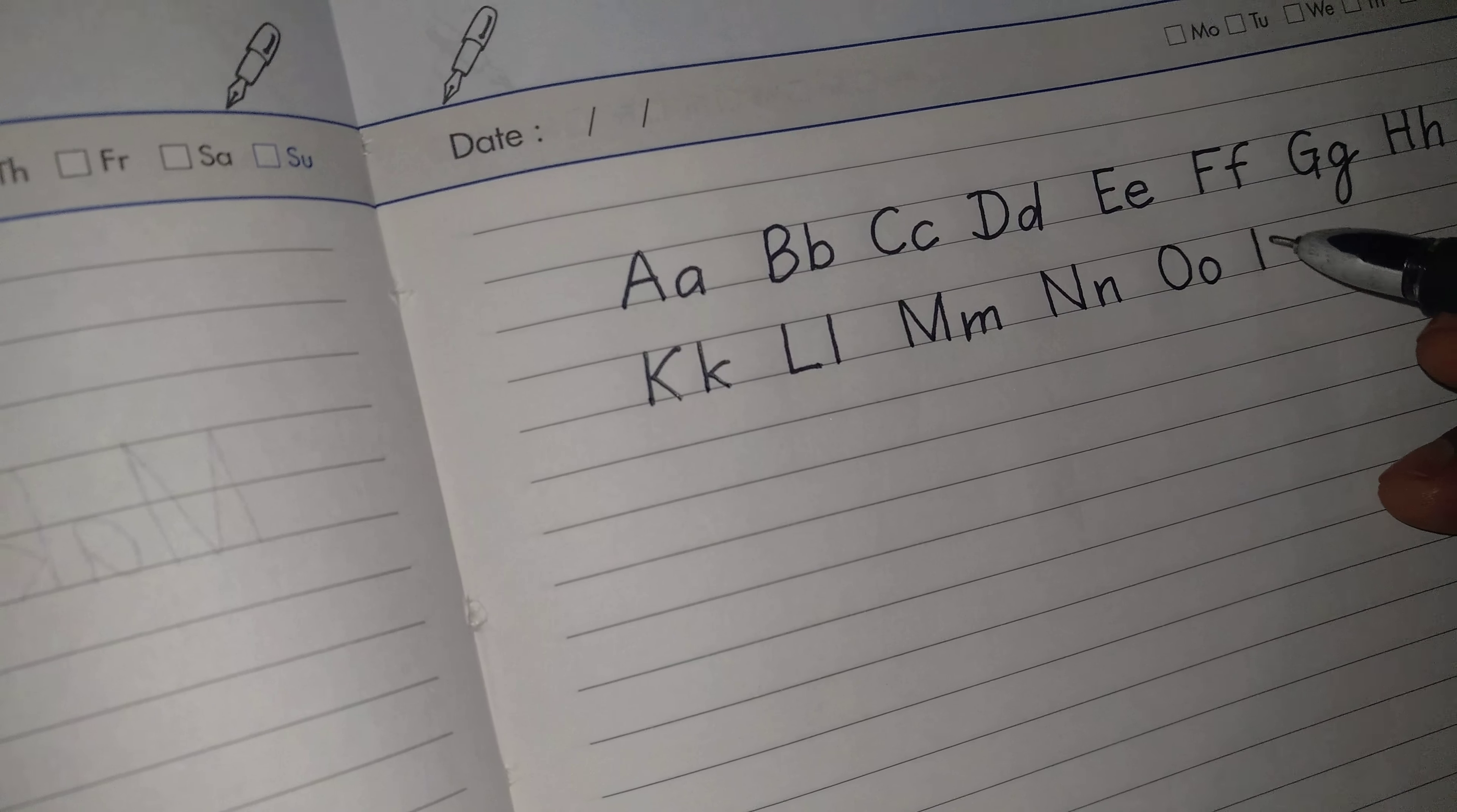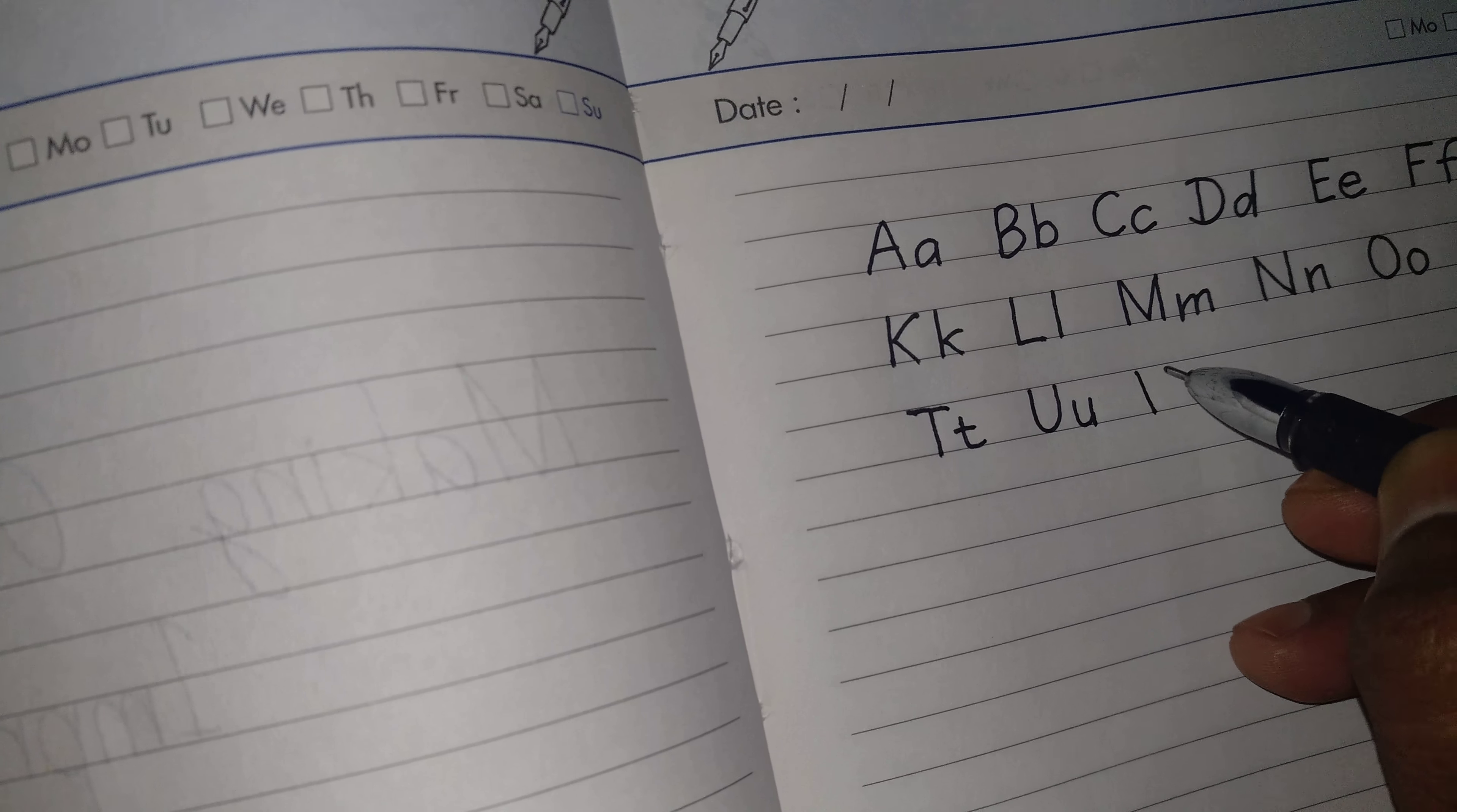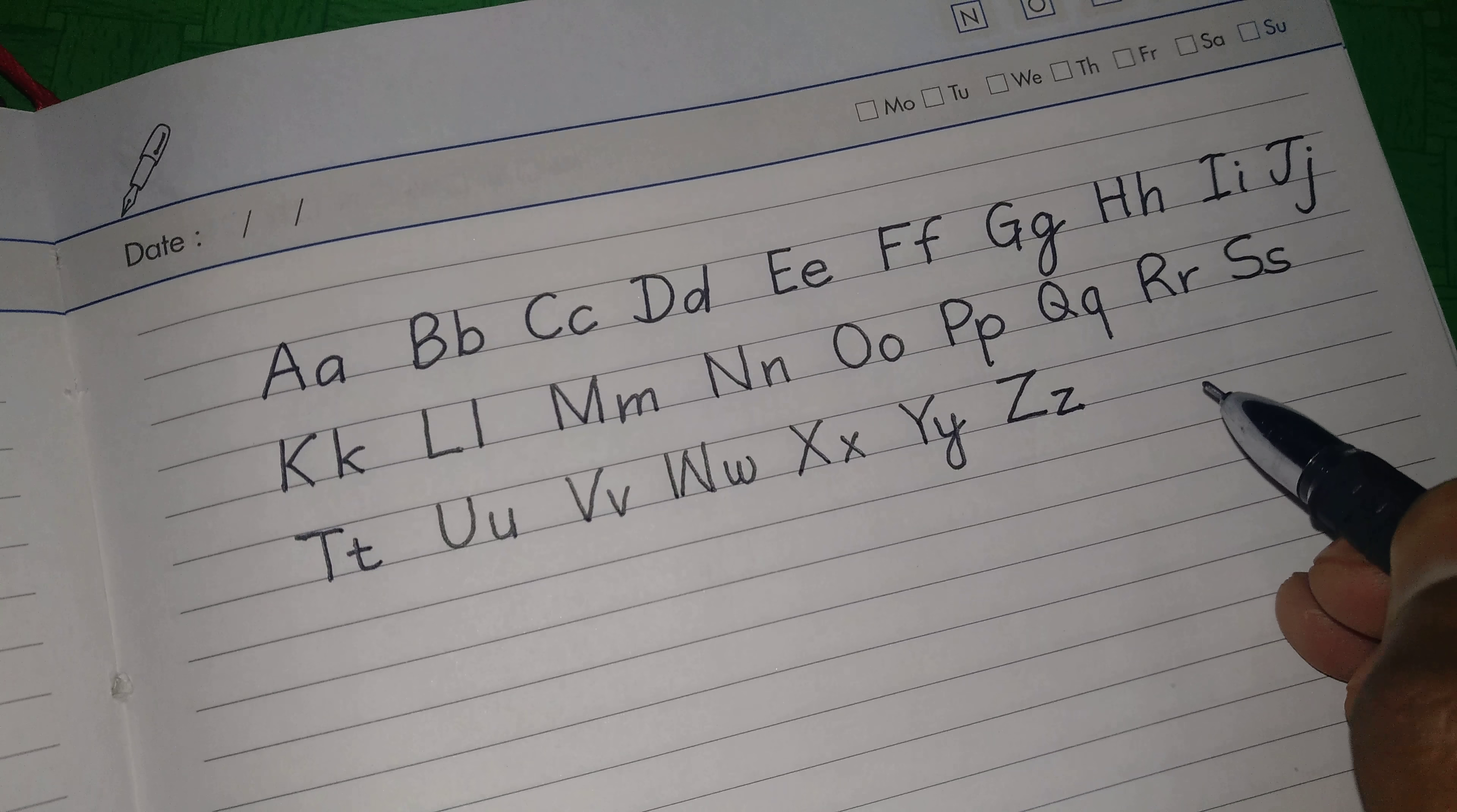O small one, P capital and the small will be down P. Q, you write O and just cross it Q, and this is P and it becomes R. S, and T. U, V, V, W small W, X, X, Y, and Z. So this is the way to write A to Z.